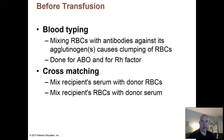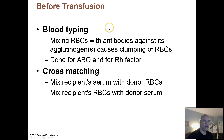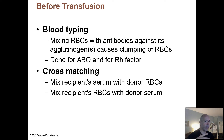So before you receive a blood transfusion, of course your blood has to be typed and you have to know the blood type of the donor's blood as well. So how is this done? You can actually use antibodies as tools to help you determine blood type. So in previous lectures we talked about how if you have type A blood, for example...